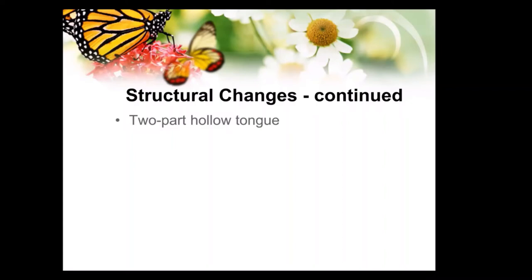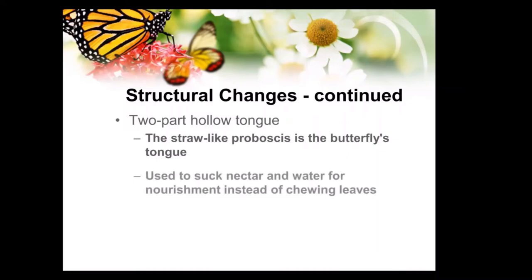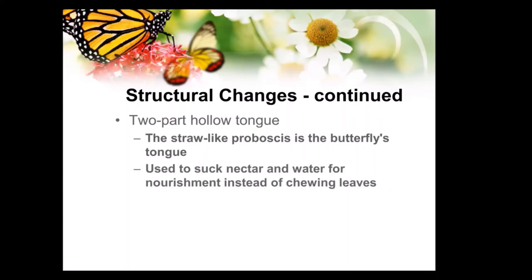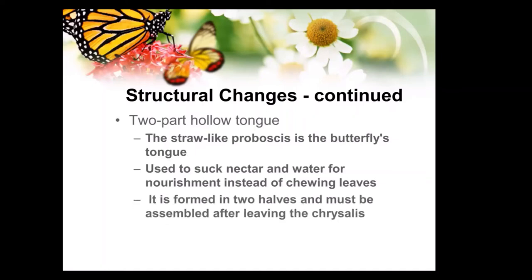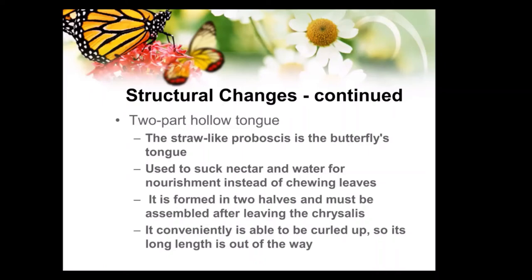The hollow tongue is really interesting — it's two parts that come together and fasten almost like Velcro. That proboscis is how it samples liquids so it can pick up nectar and water for nourishment, because it's no longer eating leaves anymore. The tongue comes out in two halves and must be clipped together after leaving the chrysalis. After that you can curl it up so it's stored and out of the way.